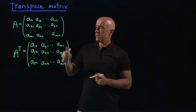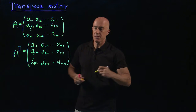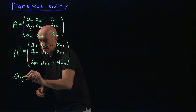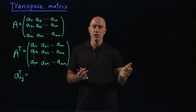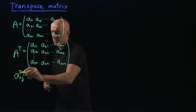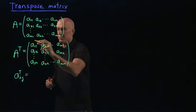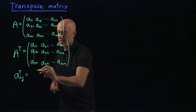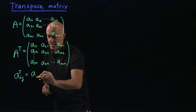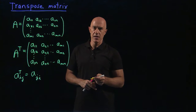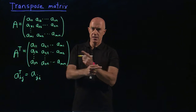If we want to write this in terms of matrix elements, we can say (Aᵀ)ᵢⱼ — we're just changing the rows and the columns. The matrix element in the i-th row and j-th column of the transpose matrix is just the matrix element in the j-th row and the i-th column of the regular matrix. So the indices get switched.